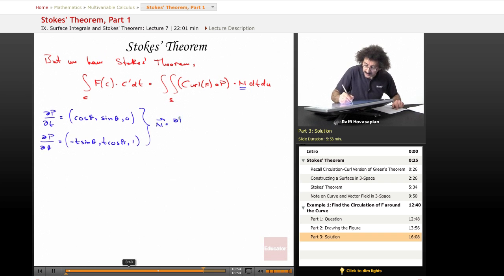Well, n is equal to dP/dt cross dP/d theta. So it's going to be dP/dt cross dP/d theta. And when I go ahead and run that particular one, I end up with the following: I end up with sine theta, minus cosine theta, and t. So that's n.